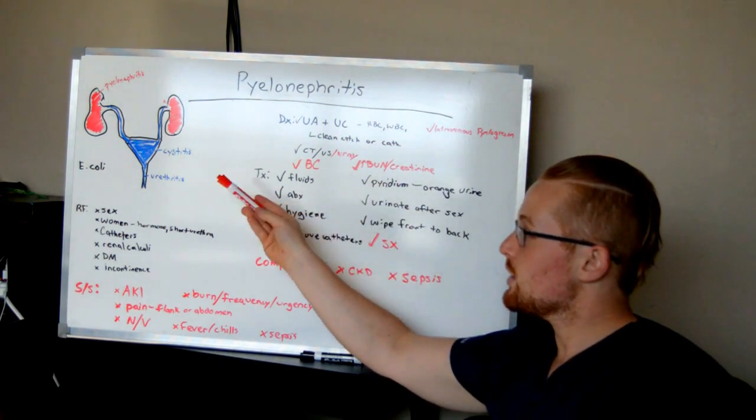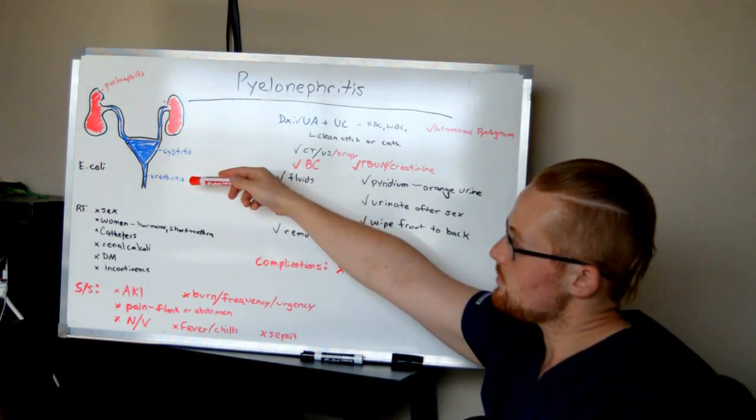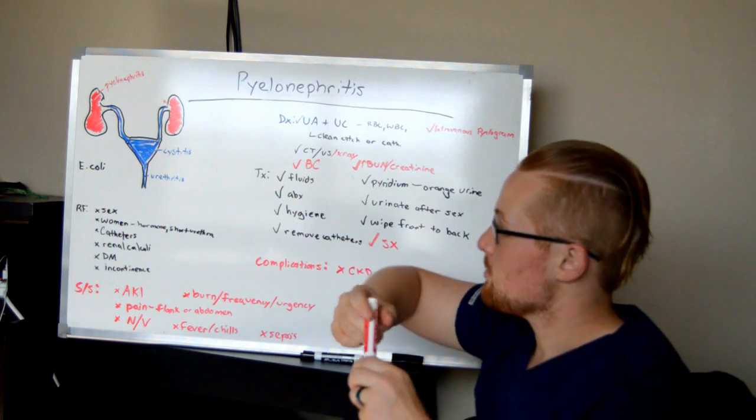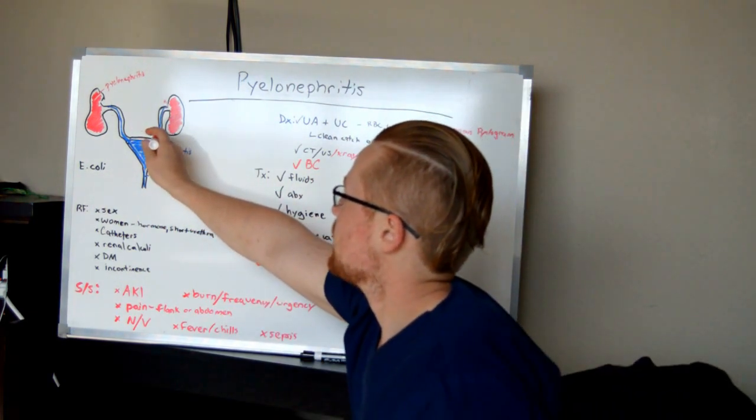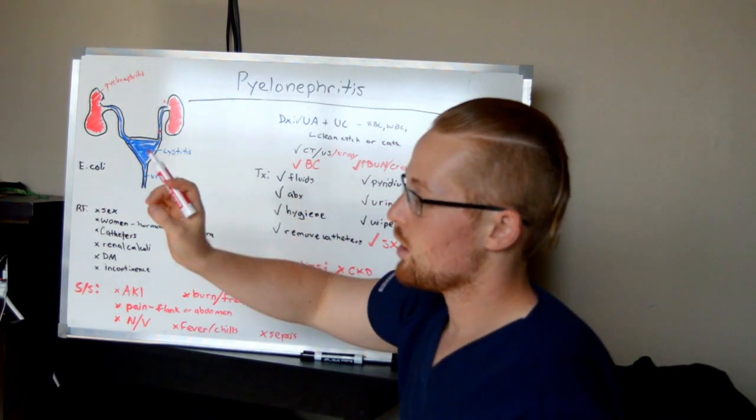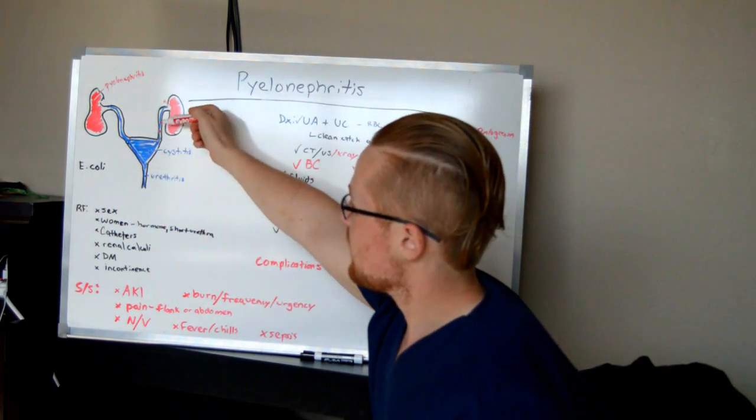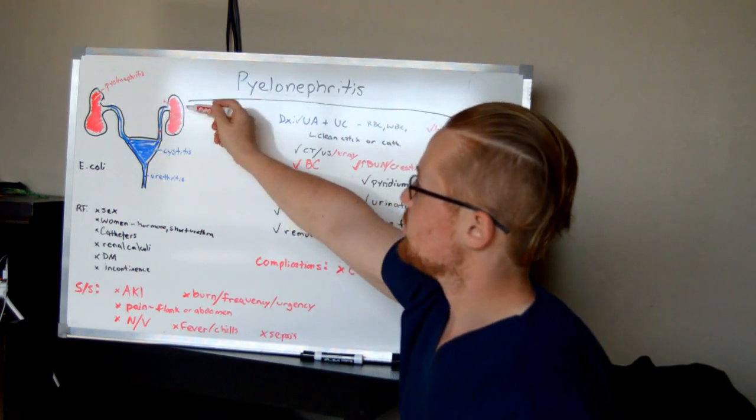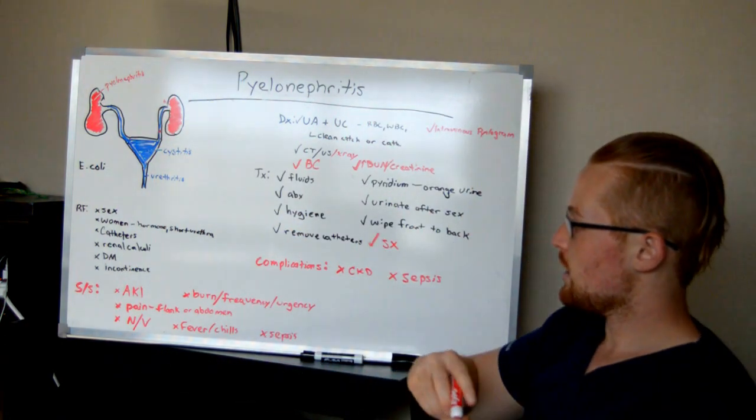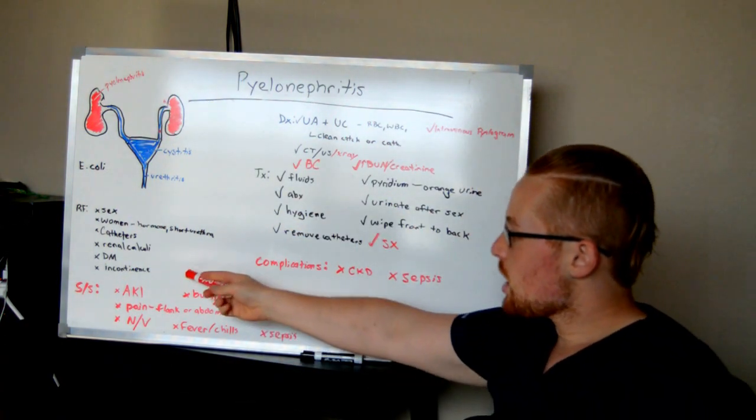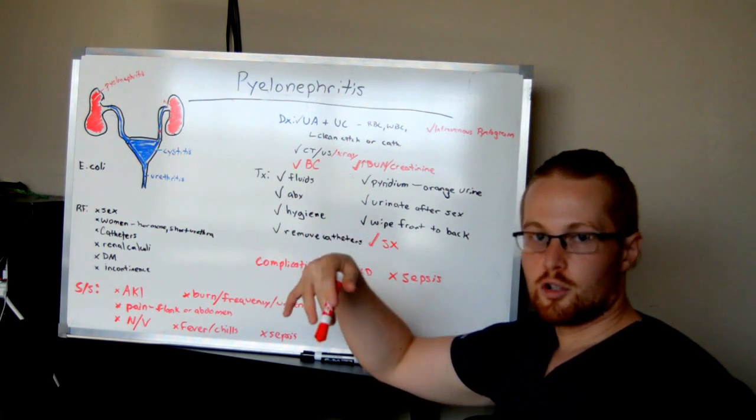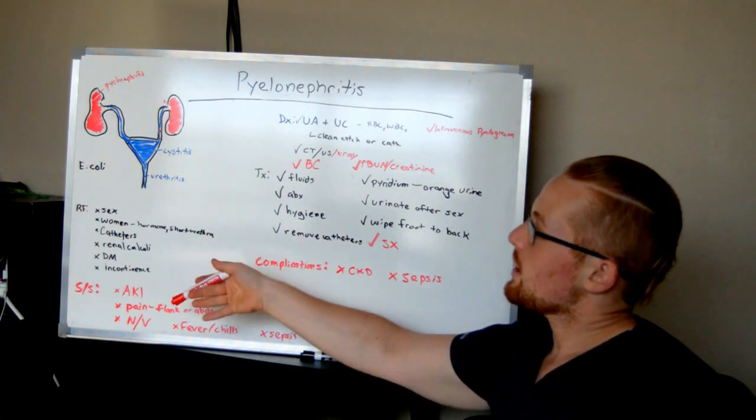Kidney stones are very porous and can hold onto bacteria. If you have a kidney stone or renal calculi in this urethral system, that urine isn't going to be moving down—it's going to back up and that bacteria is going to stay in the kidney. Incontinence is another risk factor because you're getting stool on your urethra, and bacteria can work its way up.